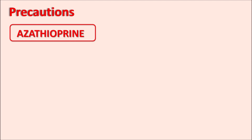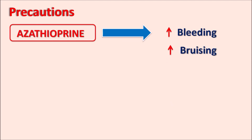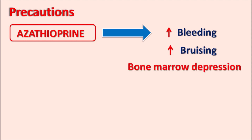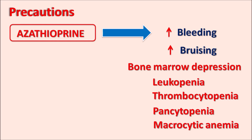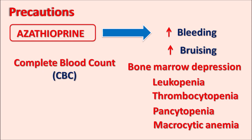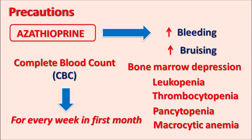Important precautions include increased bleeding and bruising in patients due to bone marrow depression, leading to leukopenia (decreased leukocyte count) and thrombocytopenia (decreased thrombocytes). This drug can also cause pancytopenia and macrocytic anemia. Therefore, a complete blood count (CBC) should be performed frequently — every week during the first month of treatment, then twice a month, and then once a month to monitor for hematological disorders.